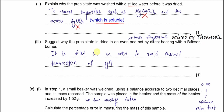Part B3: suggest why the precipitate is dried in an oven and not heated directly with a Bunsen burner. The temperature of a Bunsen burner is relatively high, so the silver chloride might decompose, making the mass obtained inaccurate. The oven operates at around 80–90°C, which is much lower than the Bunsen burner temperature. So the answer is: it is dried in an oven to avoid thermal decomposition of the silver chloride.